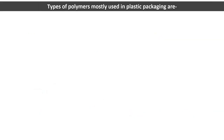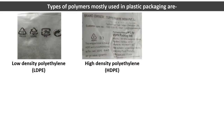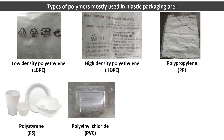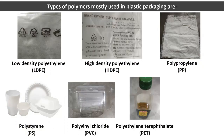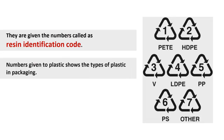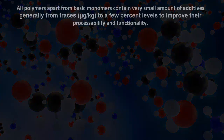Types of polymers mostly used in plastic packaging are low-density polyethylene (LDPE), high-density polyethylene (HDPE), polypropylene (PP), polystyrene (PS), polyvinyl chloride (PVC), polyethylene terephthalate (PET), and polycarbonate (PC). They are given numbers called resin identification codes, which show the types of plastic in packaging. These numbers are helpful in recycling disposed packaging.